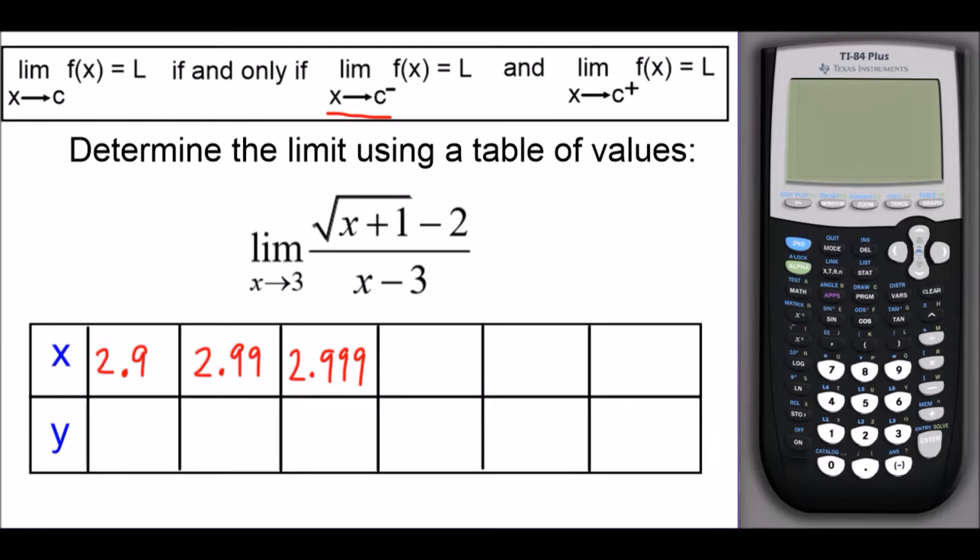And now to come in from the right side, we're going to choose x values that are slightly bigger than 3. So if we start off with 3.1, the next value we could look at is 3.01, and then we'll have 3.001.